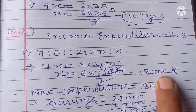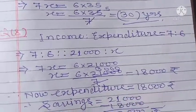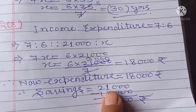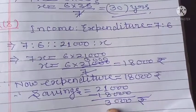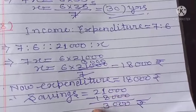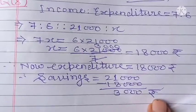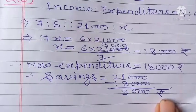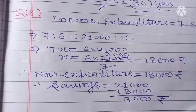Now to find savings, the income is 21,000 and expenditure is 18,000. So savings equals 21,000 minus 18,000 equals 3,000. The savings is rupees 3,000. Okay, that is enough for today. The next questions we will do later.